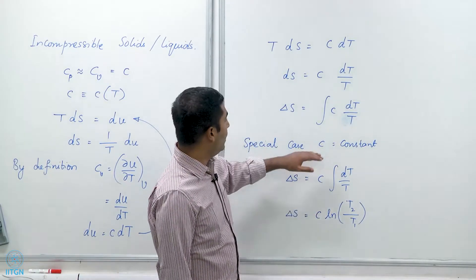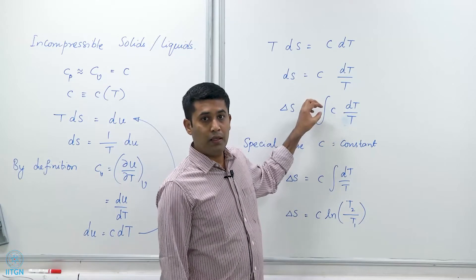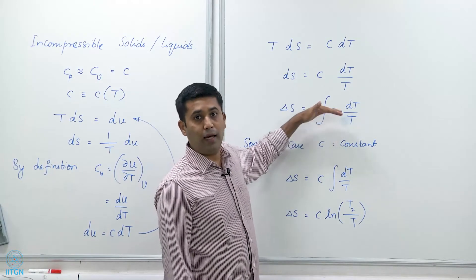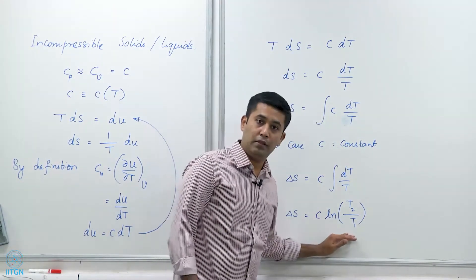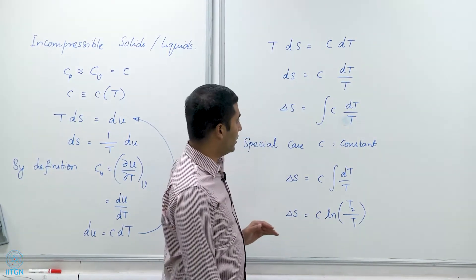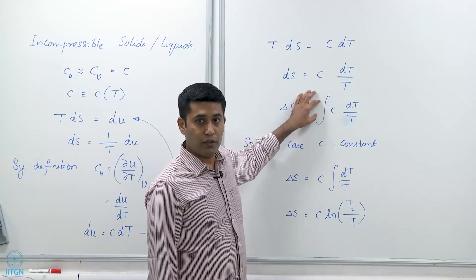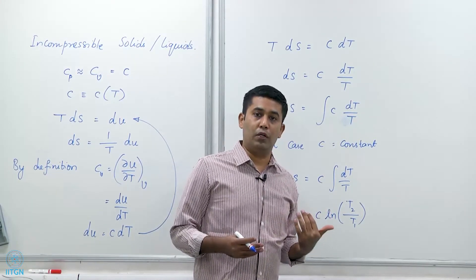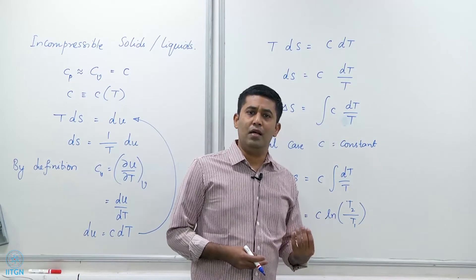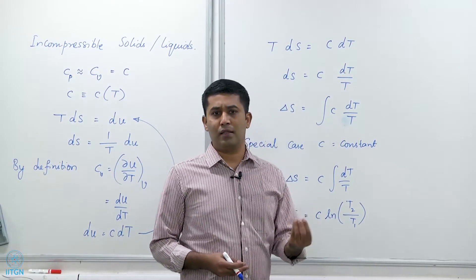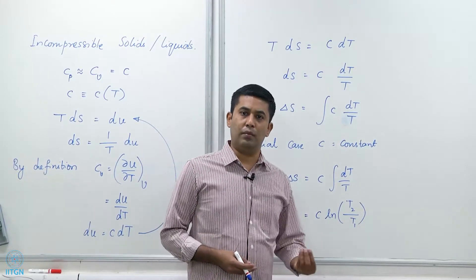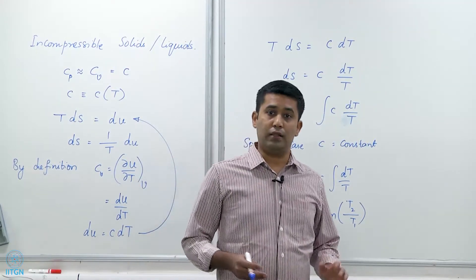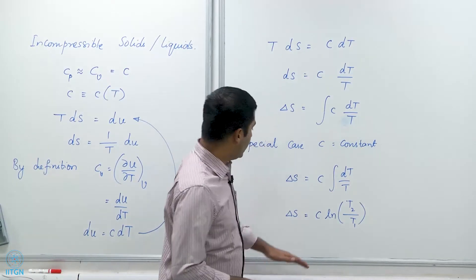Remember, I can do this only if I am able to pull c out of the integral. Many times I am not able to do that, so I have to leave the integral as is. But if I can pull it out, then I can simplify it to this expression. It is not always possible — especially if the temperature ranges are large, c tends to vary quite a bit. But in many cases, if the temperature change is only 50 to 100 Kelvin, one could reasonably assume c remains constant and pull it out of the integral, only for incompressible liquids and solids.